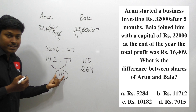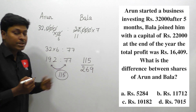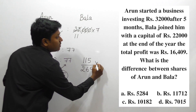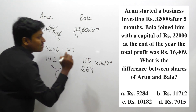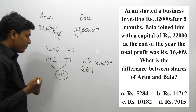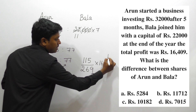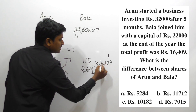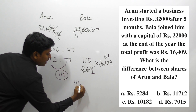The difference in their share ratio is 115, and the total is 269. The profit is 16,409. So we need to calculate 115 divided by 269 multiplied by 16,409. When we cancel: 269 goes into 16,409 — 269 times 61 equals 16,409, so we get 61. Finally we need to multiply 115 into 61.